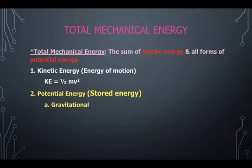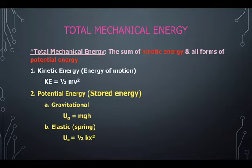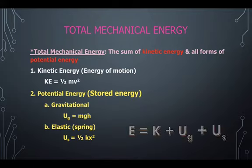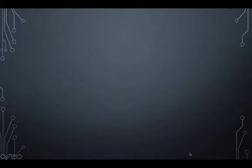Potential energy, or stored energy, can be either gravitational or elastic. And the gravitational potential energy equation is mgh, while the spring potential energy equation is 1 half kx squared. The total mechanical energy is just the sum of all those types of energy combined.